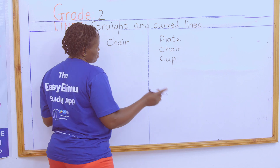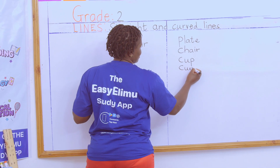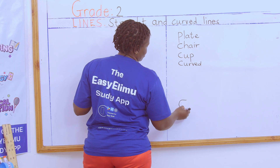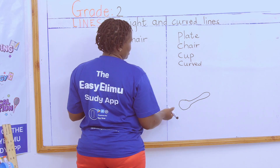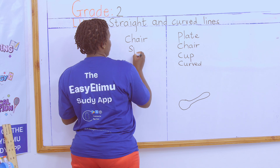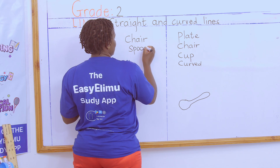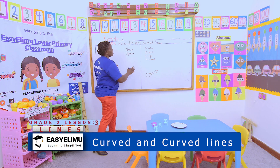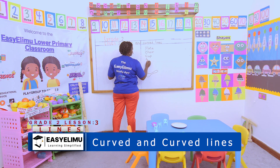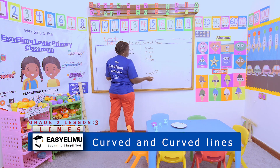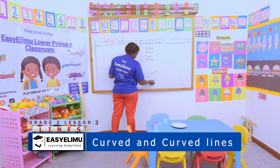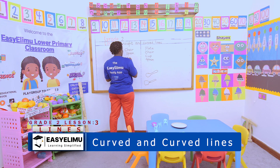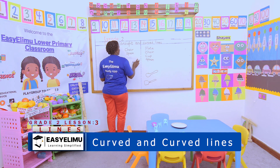We have the spoon — a spoon has both curved and straight lines. This side is curved, then it comes down — so a spoon can be both curved and straight. The cooking stick also looks the same as the spoon. The cooking stick has straight lines.